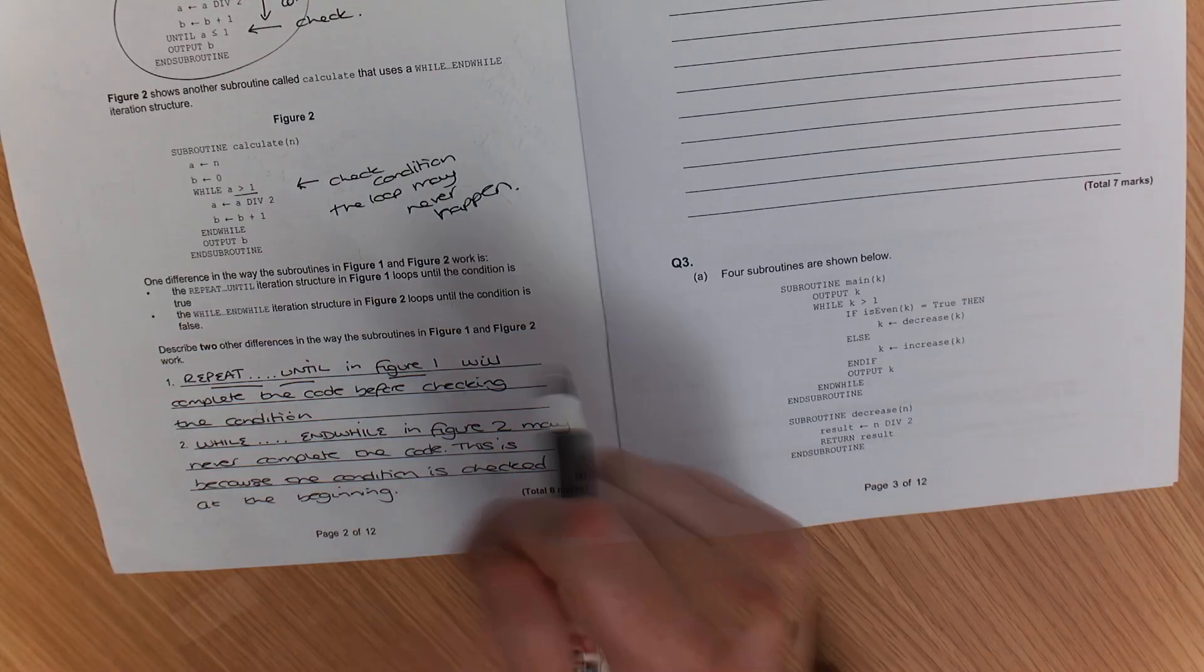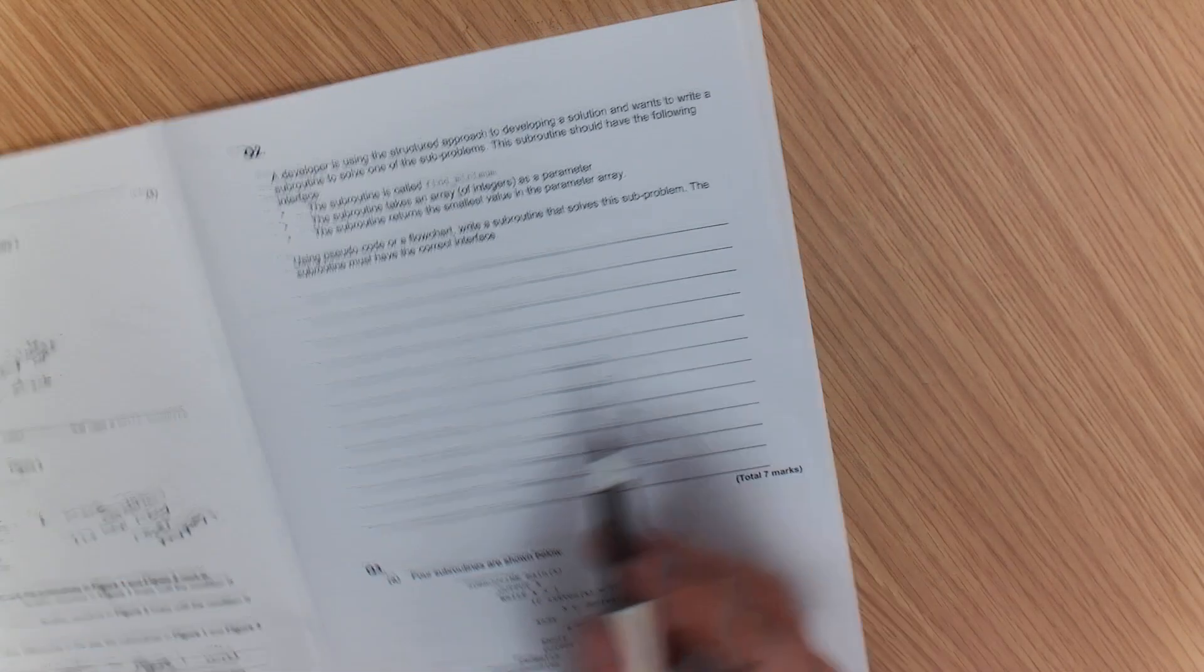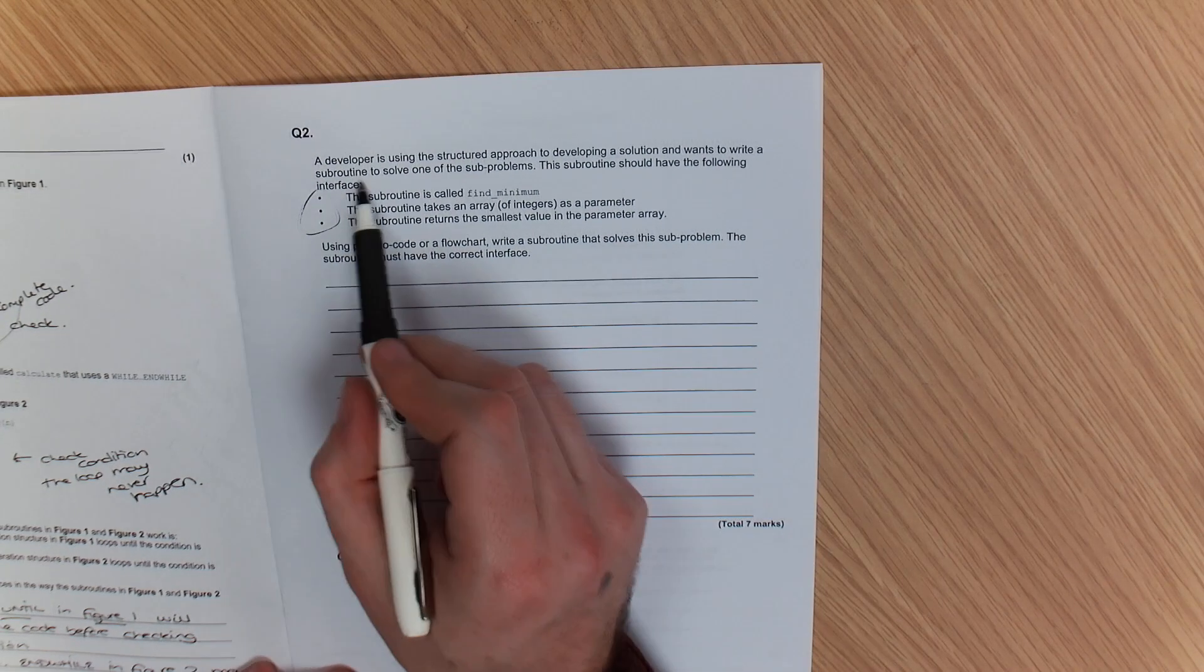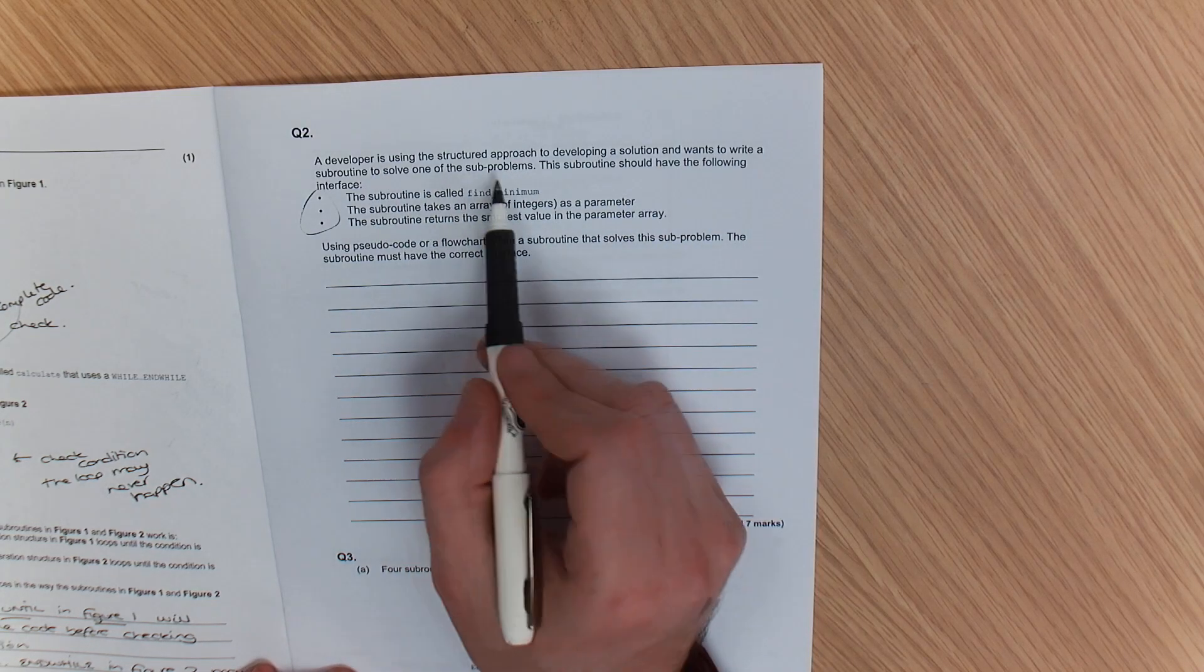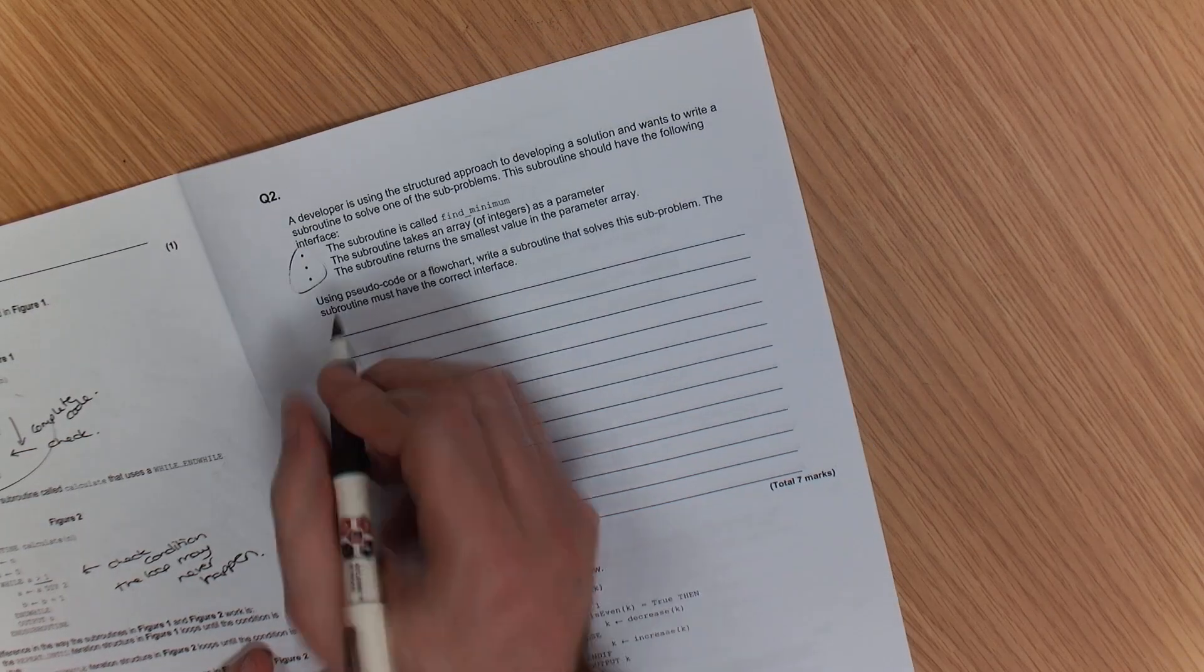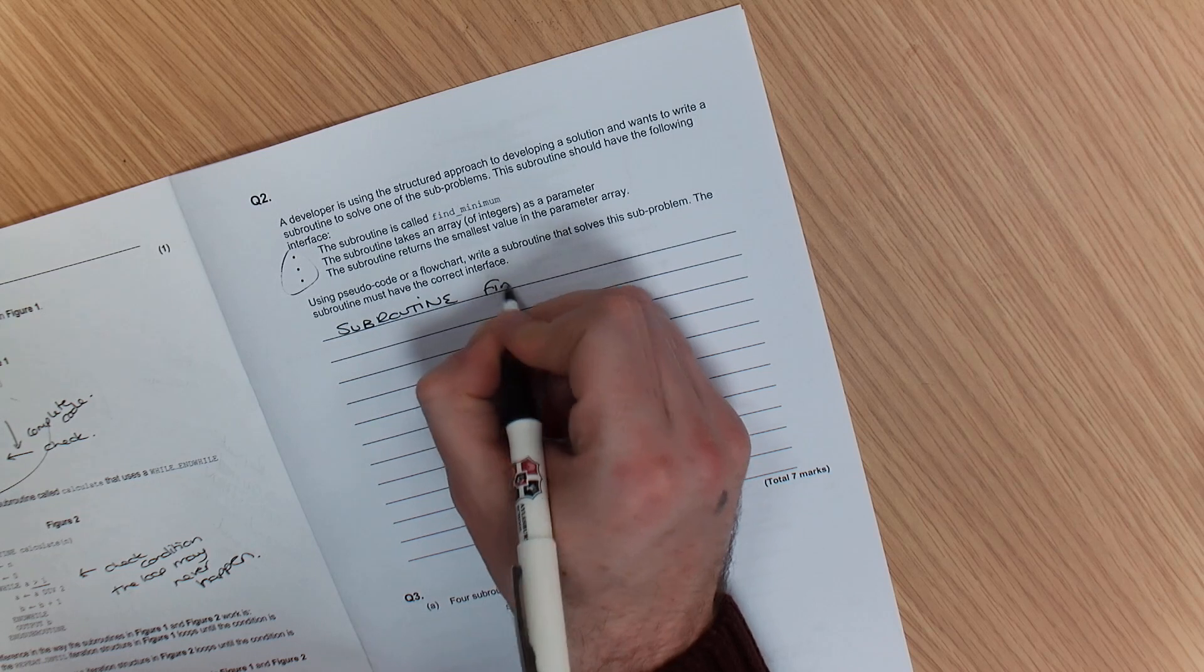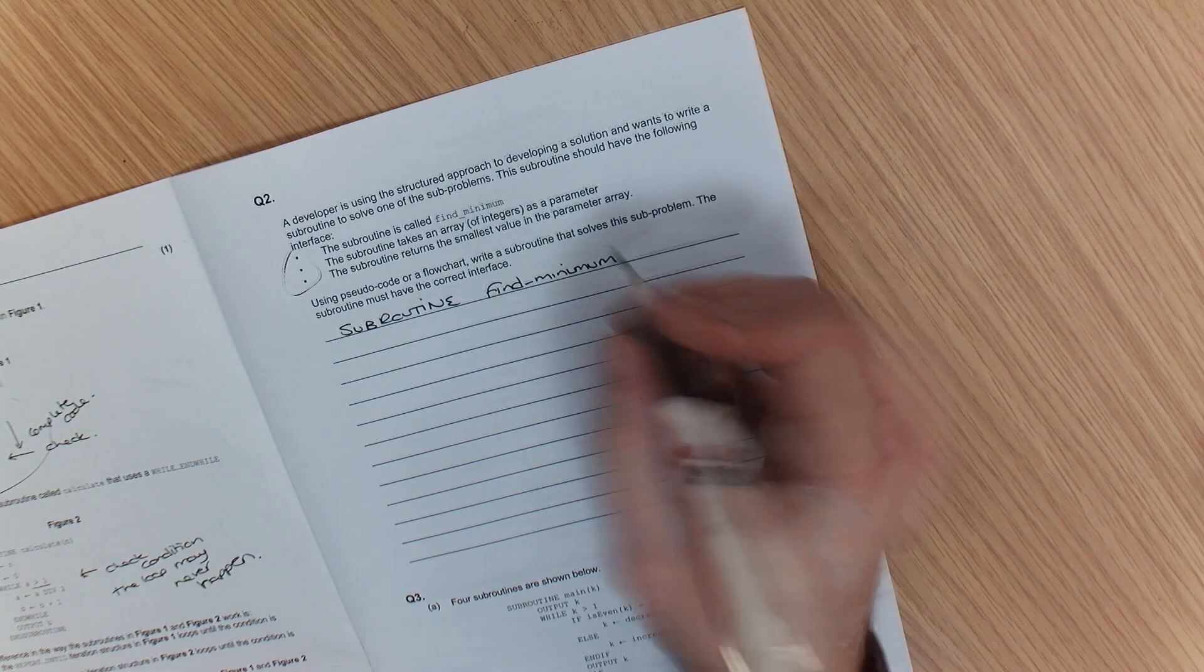You're referring to the image, and you're also giving me an example of the code. This one here would be, while, and while, in figure two, may never complete the code. This is because the condition, condition is checked at the beginning. Now I'm going to move on to one more question that we're going to work through. Now what we've got here is a subroutine.